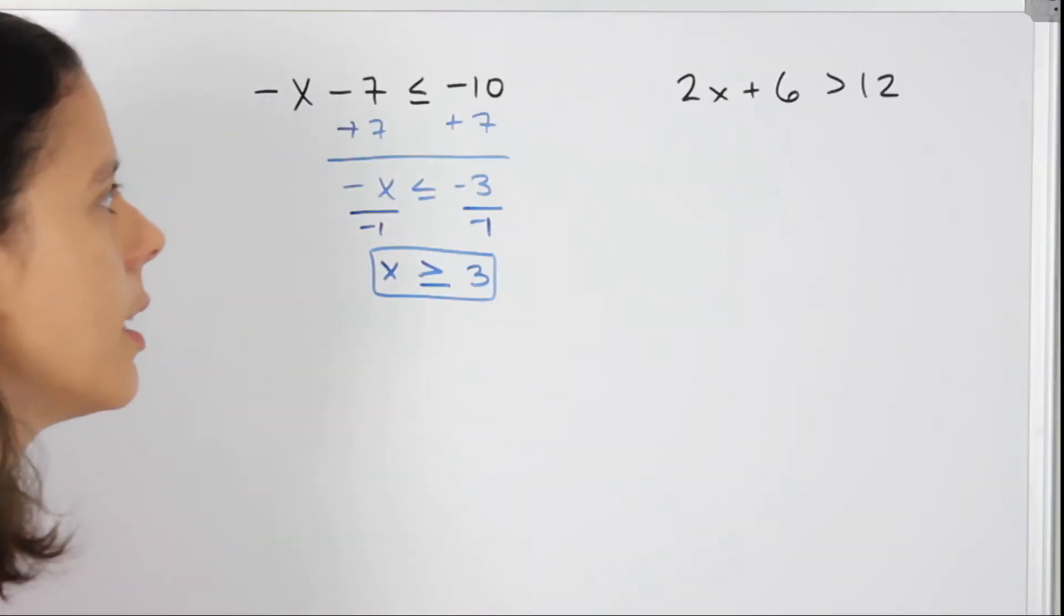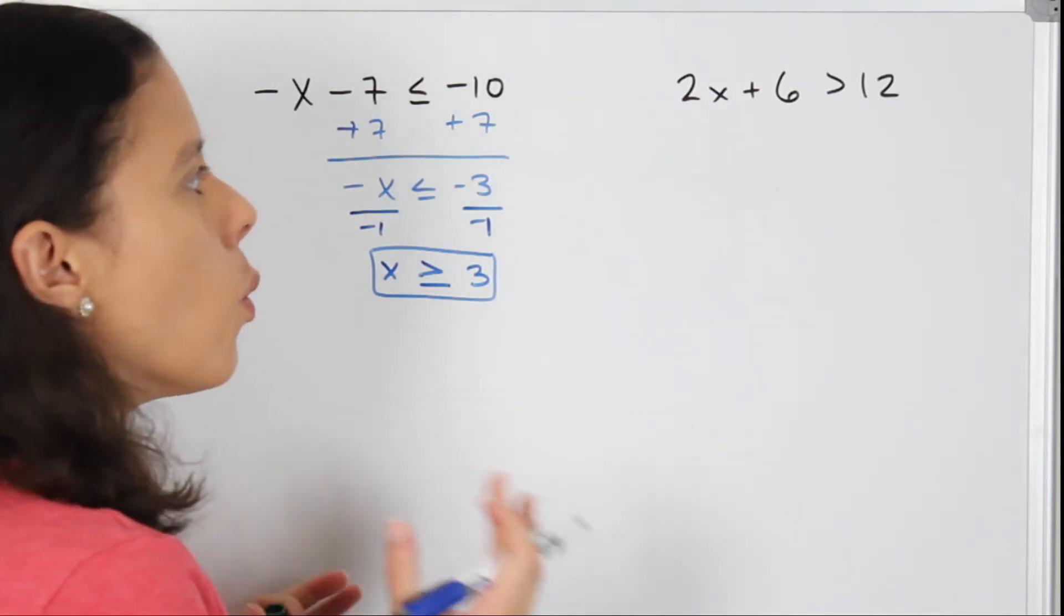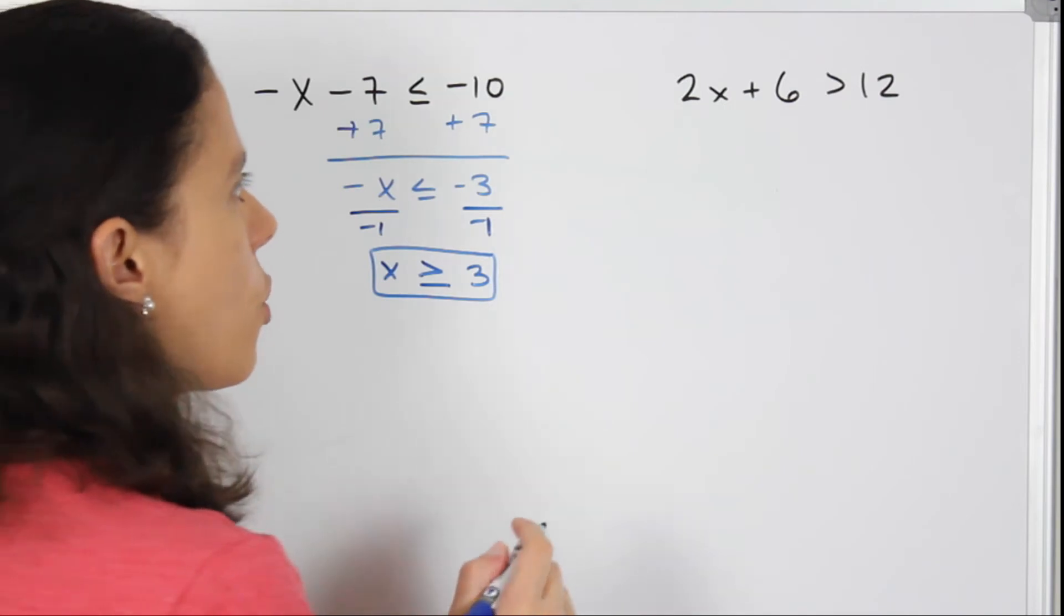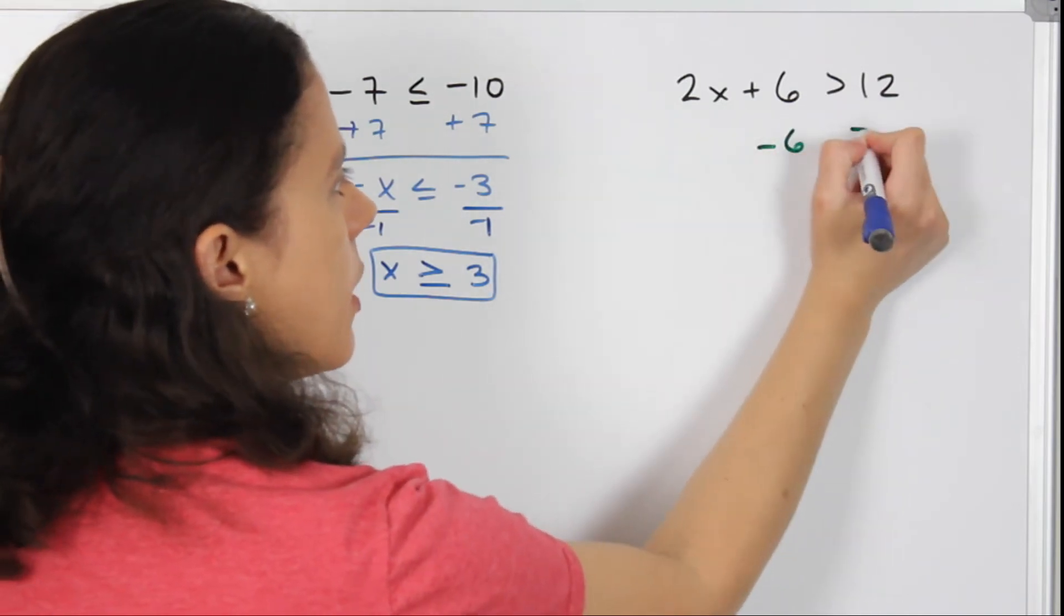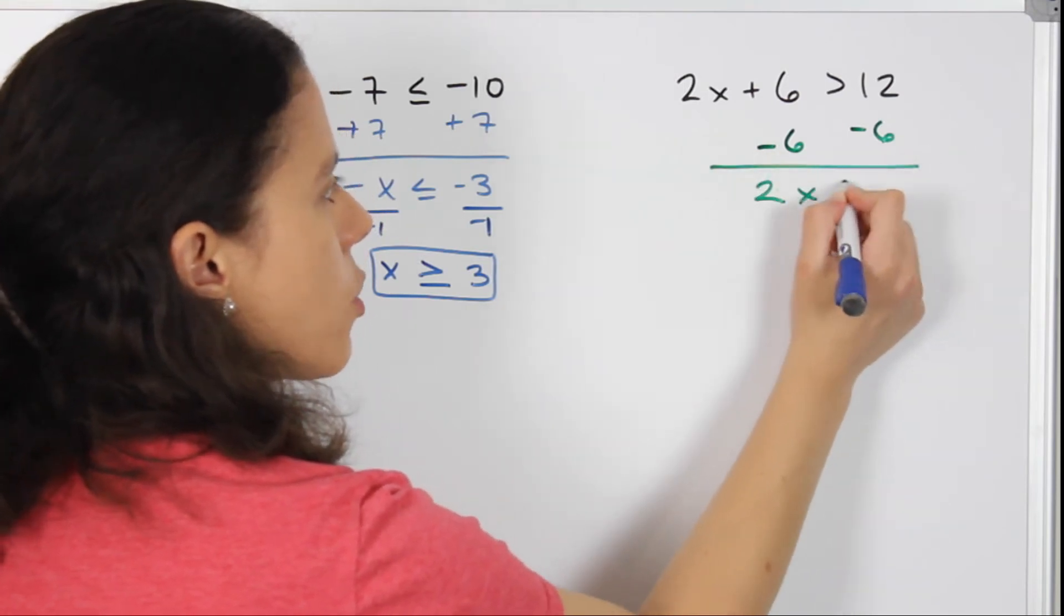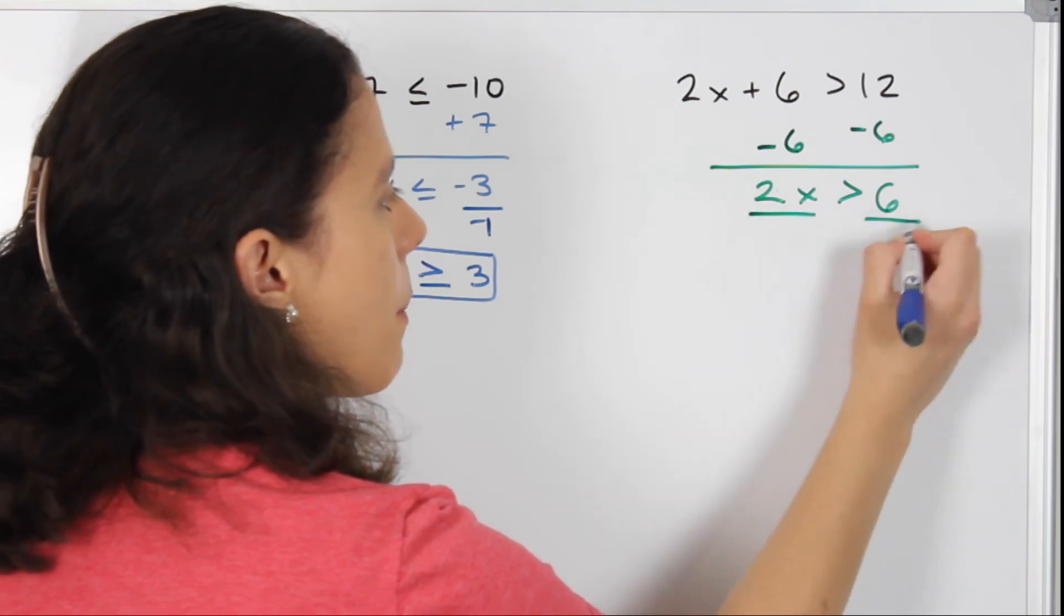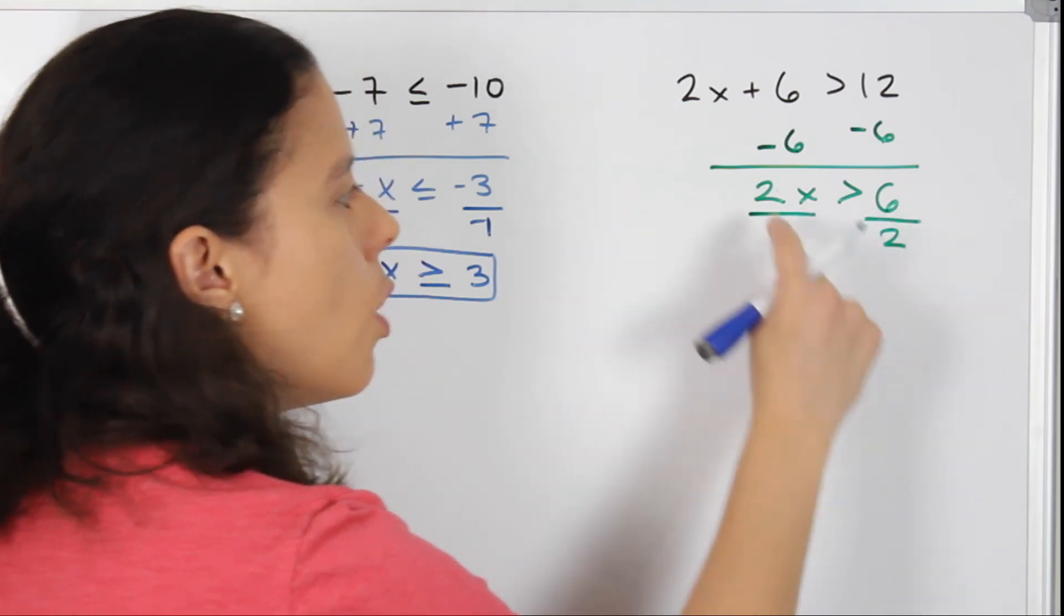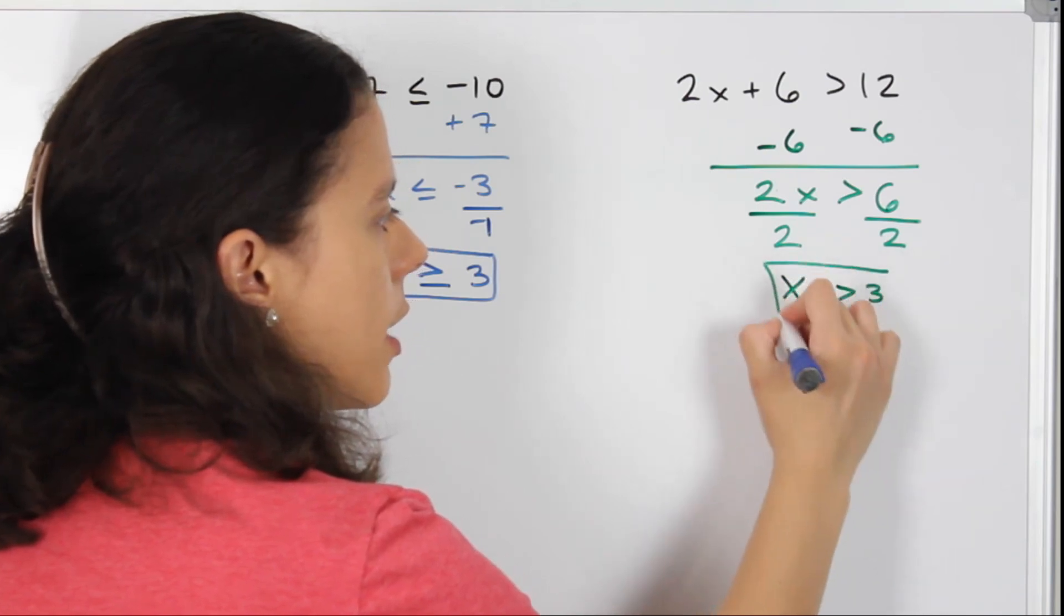In this exercise, where we have 2x + 6 is greater than 12, we do not have to flip the sign. I'm going to show you why. I will subtract by 6 on both sides. That will leave me with 2x is greater than 6. And when I divide, I'm just going to be dividing by positive 2 on both sides. So x is going to be greater than 3.